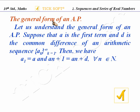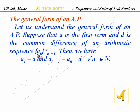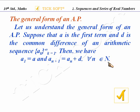The general form of an AP. Let us understand the general form of an AP. Suppose that A is the first term and D is the common difference of an arithmetic sequence, denoted ak for k equal to 1 to infinity. Then we have A1 equal to A, that is the first term equals A, and A(n+1) equals An plus D for all n belonging to capital N.